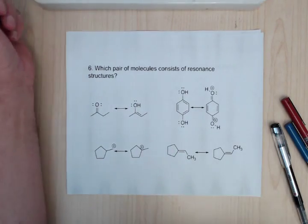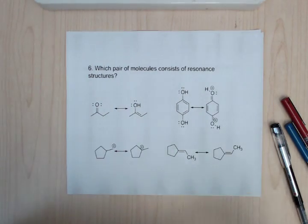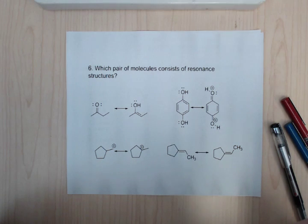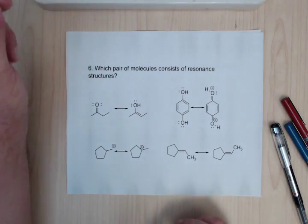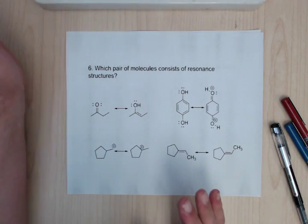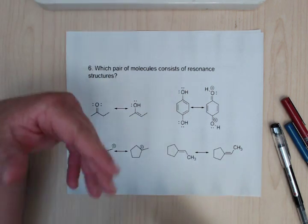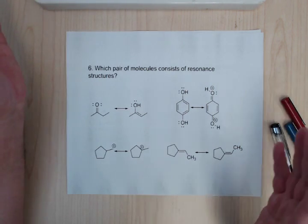So for this one, which pair of molecules consists of resonance structures? So remember with resonance structures, one of the big things is the atoms cannot move, only electrons. You can move pi electrons around, obviously the formal charges are going to move, but the atoms cannot move.